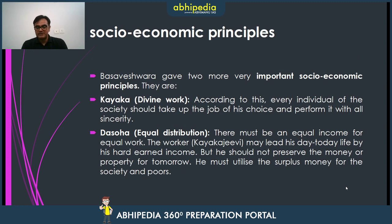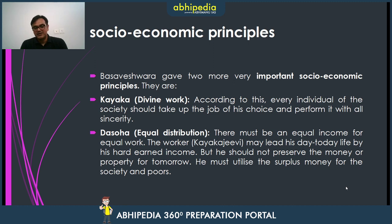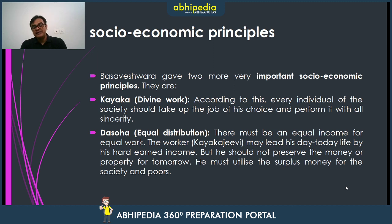What we get to learn from Basweshwara in ethics are two major socio-economic principles. First is Kaya Ka — divine work — according to which every individual of the society should take up the job of his choice and perform it with all sincerity. The second is Dasoha — equal distribution — meaning there must be equal income for equal work, and the worker, the Kaya Ka Jeevi, may lead his day-to-day life by hard-earned money and should not preserve money or property for tomorrow.